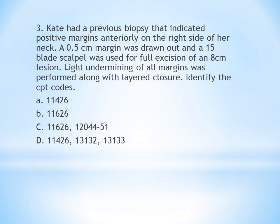The third question: Kate had a previous biopsy indicating positive margins anteriorly on the right side of her neck. A 0.5 cm margin was drawn out and a 15-blade scalpel was used for full excision of an 8 cm lesion. Light undermining of all margins was performed along with layered closure. Identify the CPT codes. The two procedures done here are excision and layered closure — layered closure means intermediate closure. When excision and intermediate closure come together, you must code for both. If it were simple closure, you would code only for the excision.